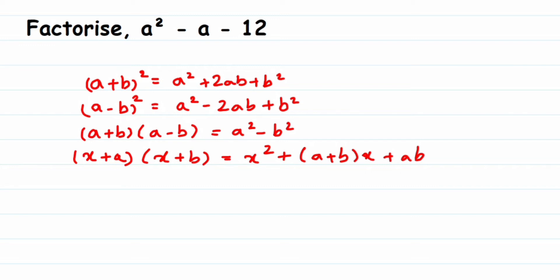Now let's see which identity to use. In the first identity, the first and last terms are perfect squares. In our question, a squared is fine, but the last term 12 is not a perfect square — we'd need something like 4 or 9. So we can't use the first or second identity. The third identity has only two terms, but our question has three terms, so we can't use the third identity either.